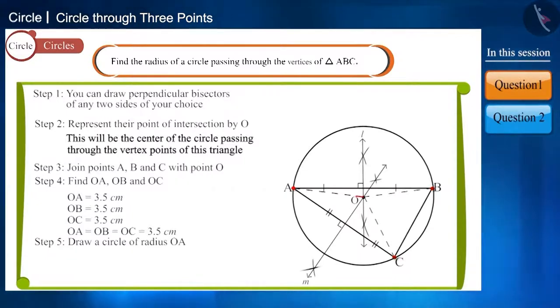OA, OB and OC are the radius of this circle, which we have seen are equal, whose length we have determined. The circle thus formed is called the circumcircle of the triangle and its center and radius are called circumcenter and circumradius respectively.